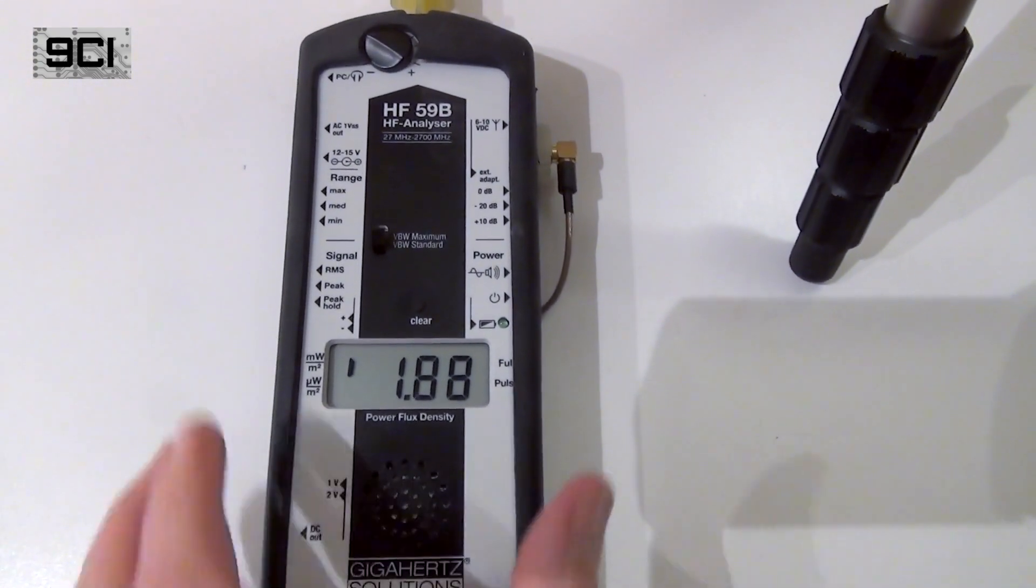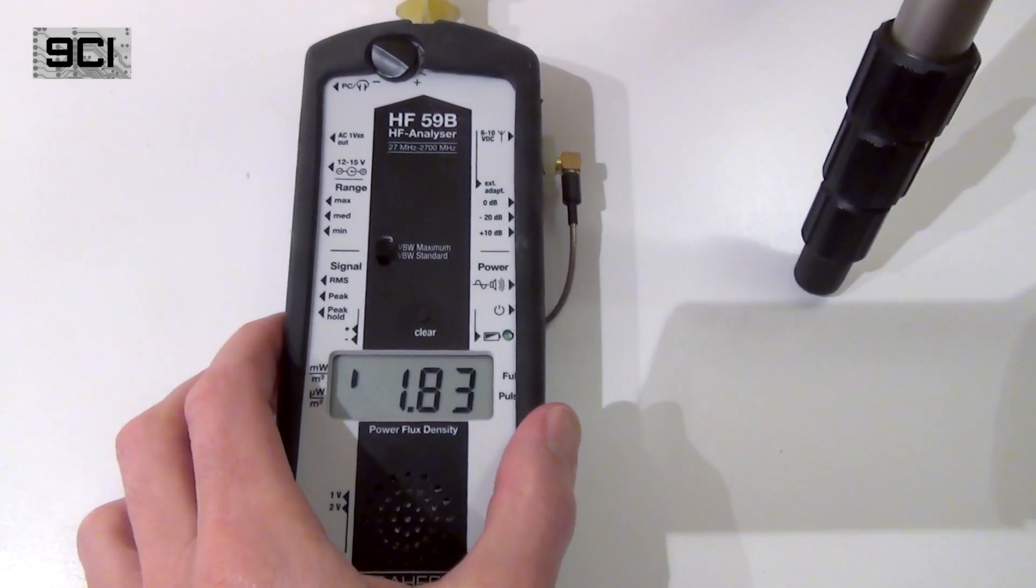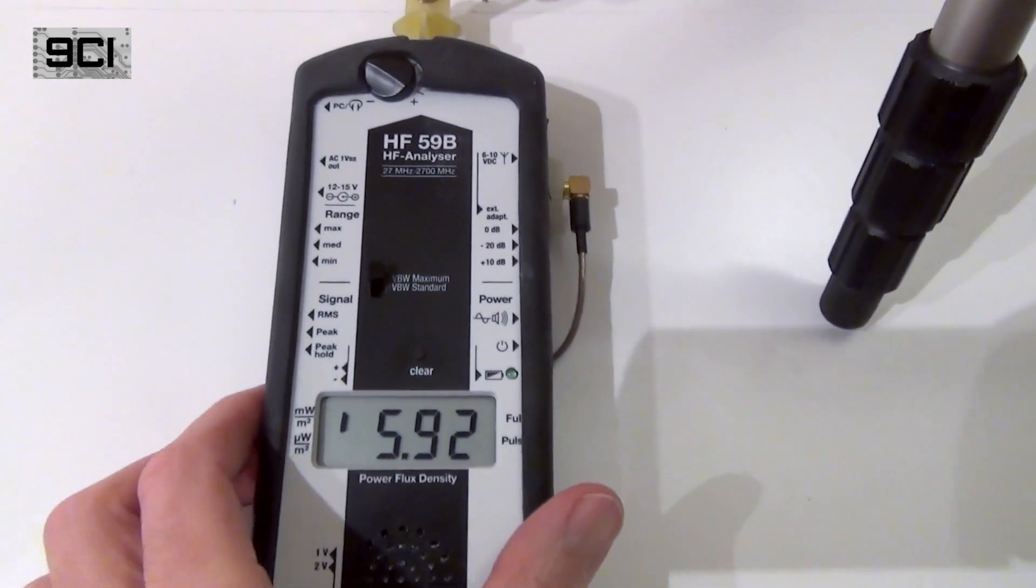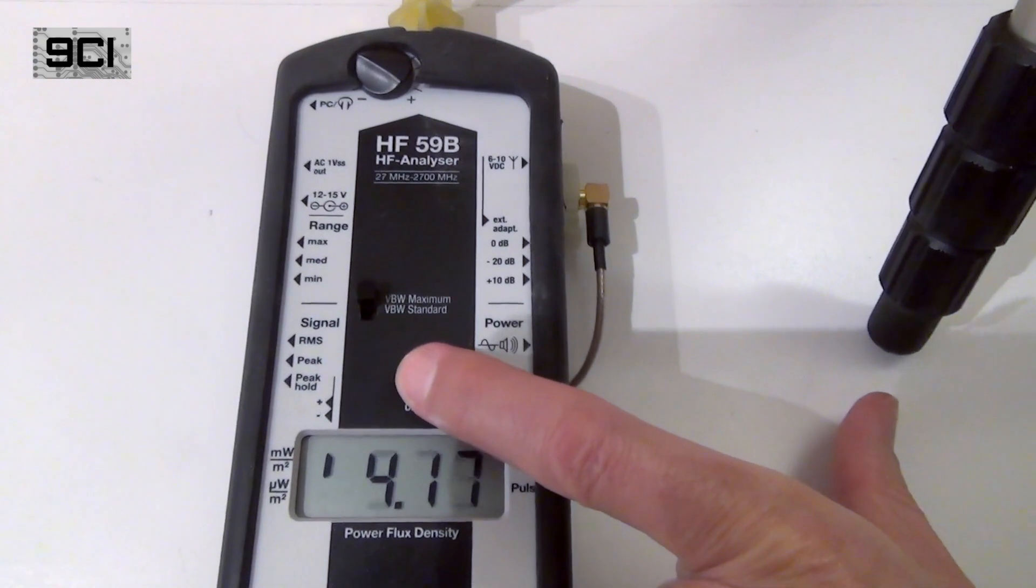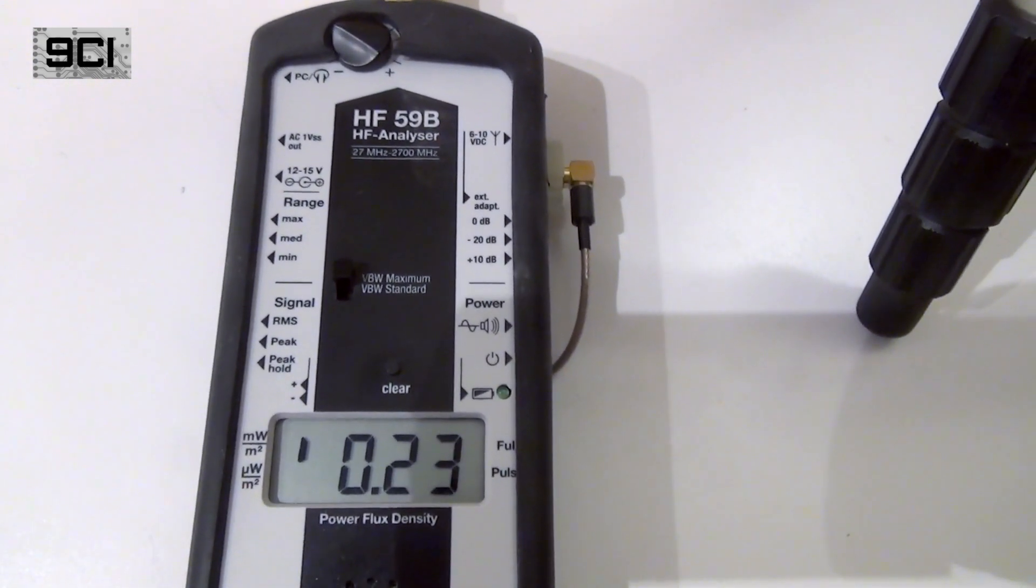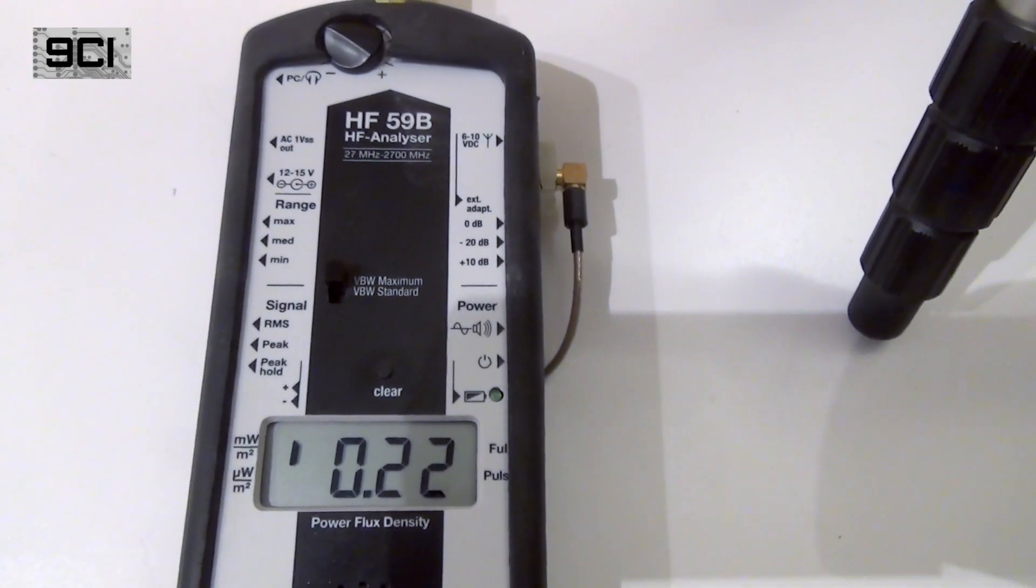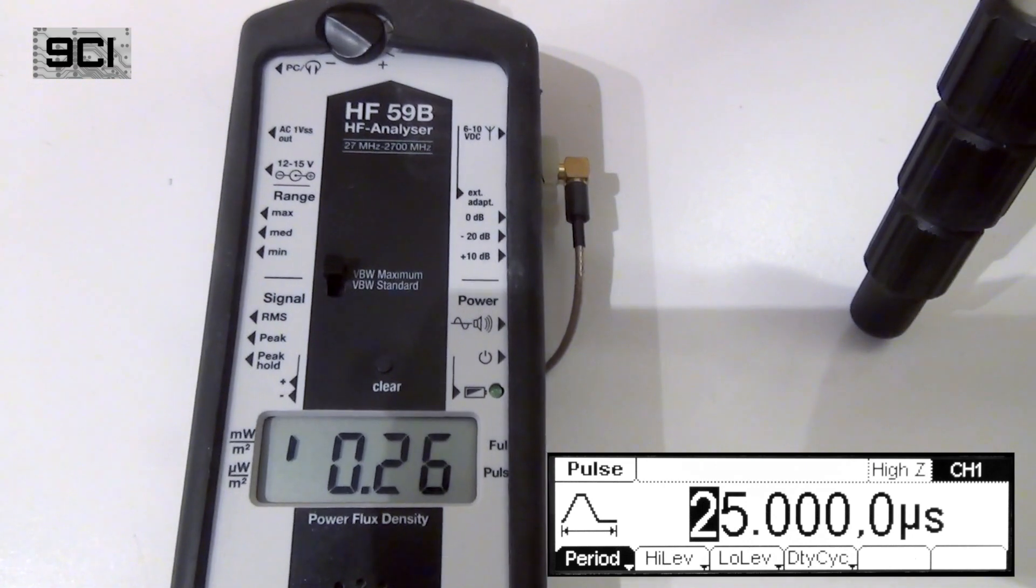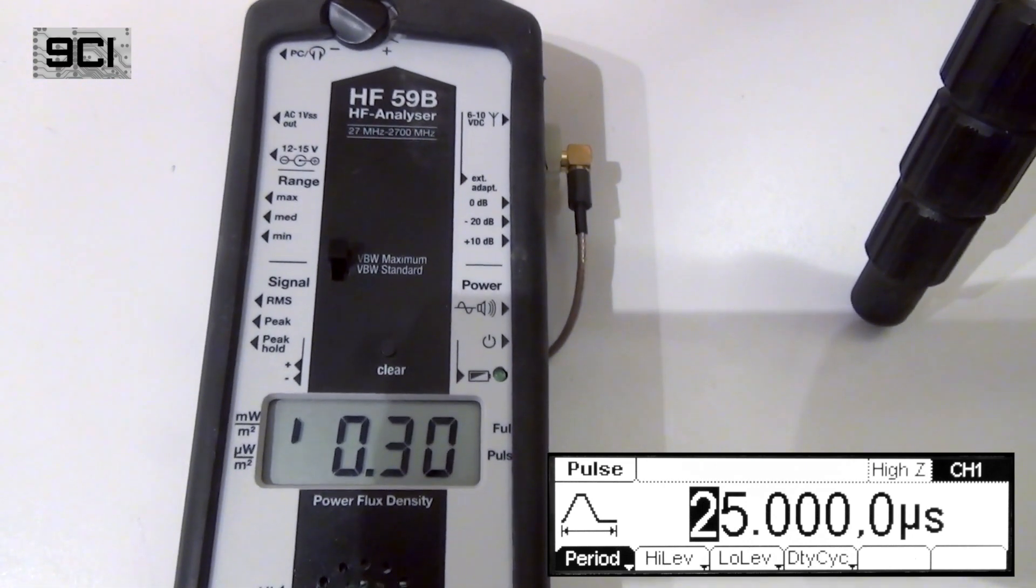Now, to measure narrow pulses, we have to put it into VBW maximum mode. And we have to clear the peak hold value. For the gigahertz solutions meter, anything under 33 microsecond pulses, we have to manually switch modes. So here's 25 microsecond pulses.